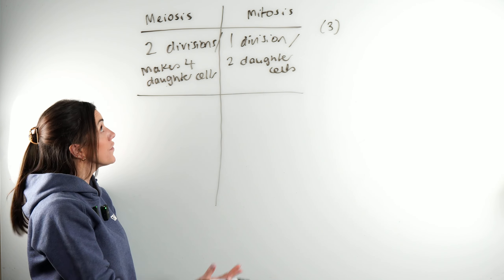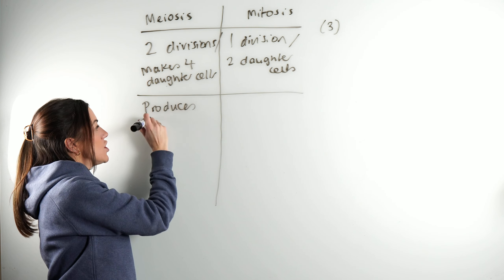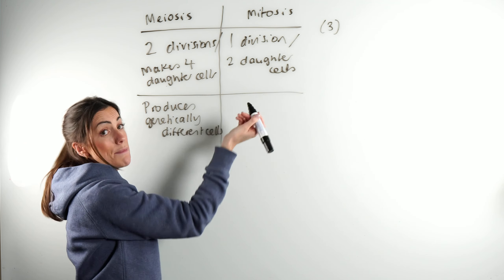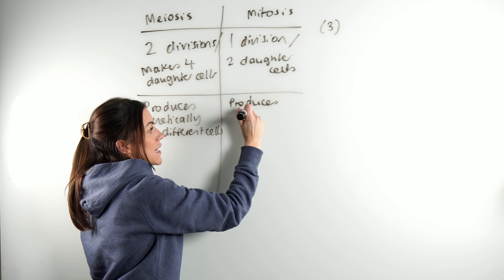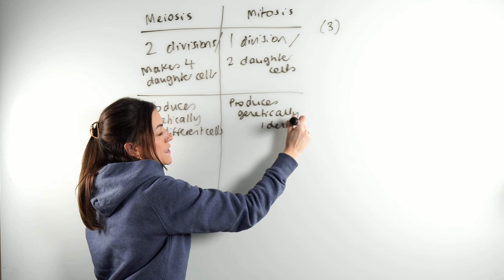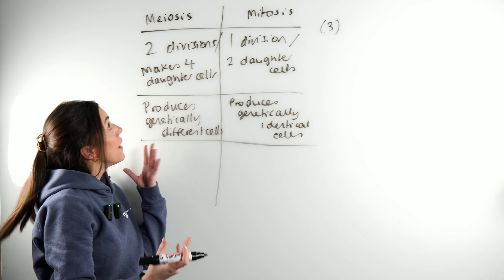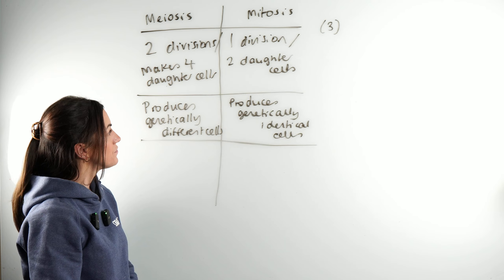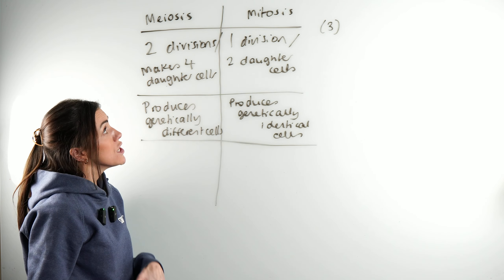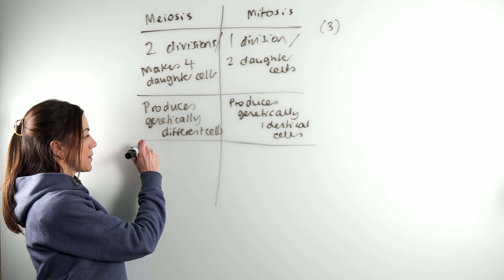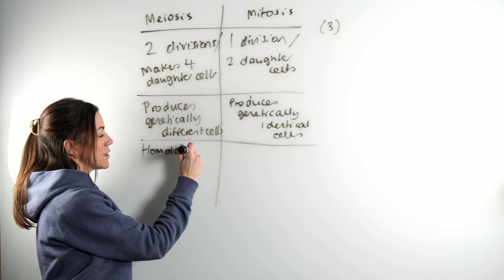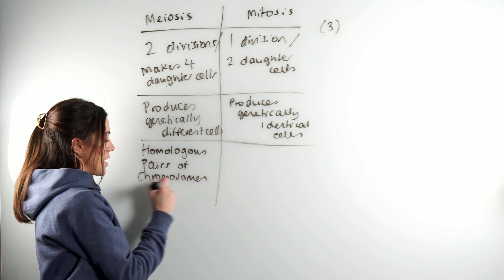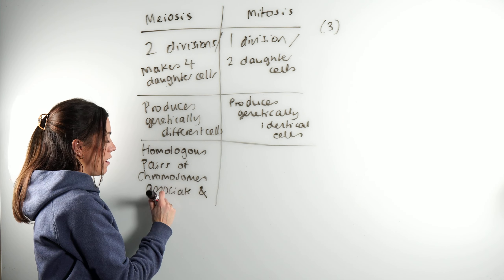Something else we can say: meiosis produces genetically different cells, whereas mitosis produces genetically identical cells. Meiosis is all about introducing variation, whereas mitosis produces cells that are clones. For a third difference: with meiosis, homologous pairs of chromosomes associate and are separated, because during meiosis one, the homologous pairs line up on the equator in pairs.